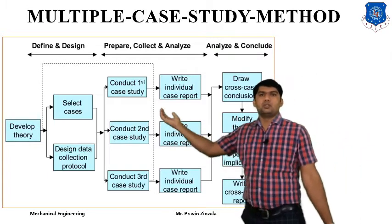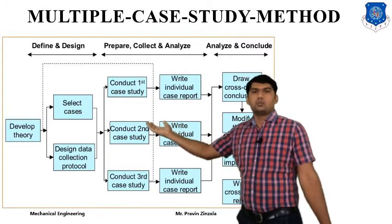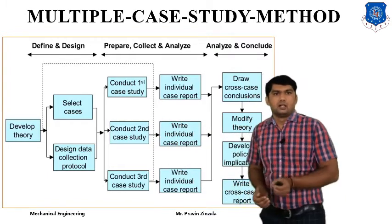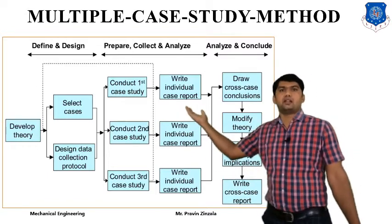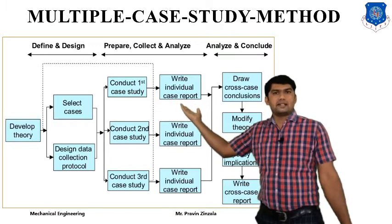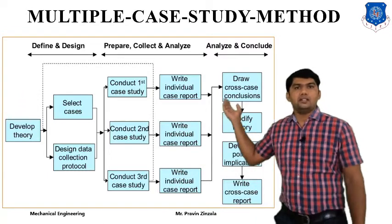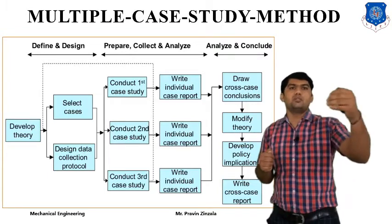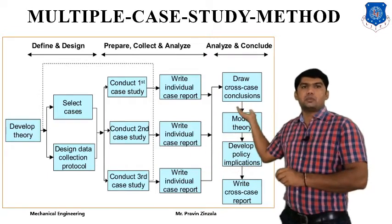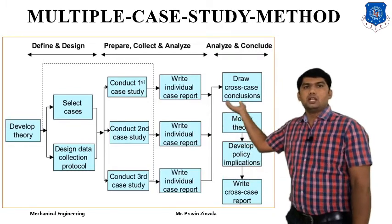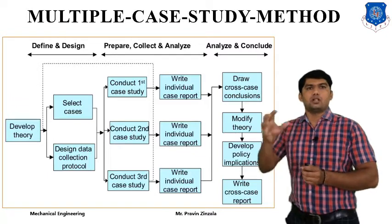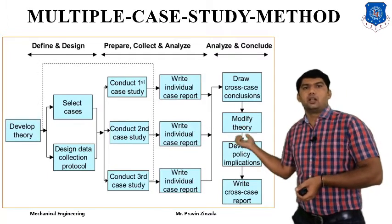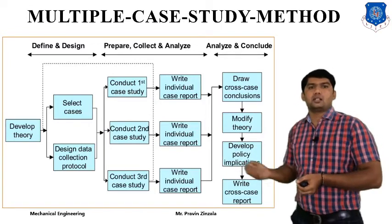In the multi-case study, the first stage is define and design. In this stage, first develop the theory, then select the case study or design data, and collect the protocol or different data required. Then in the second stage — prepare, collect, and analysis — you conduct the first, second, and third case studies and write individual reports for each component. In the third stage — analysis and conclusion — you draw a cross-case study conclusion from all reports, then modify the theory, develop the policy and implementation, and finally write the cross-case study report.